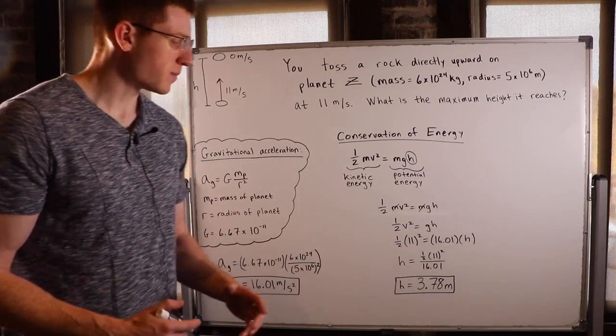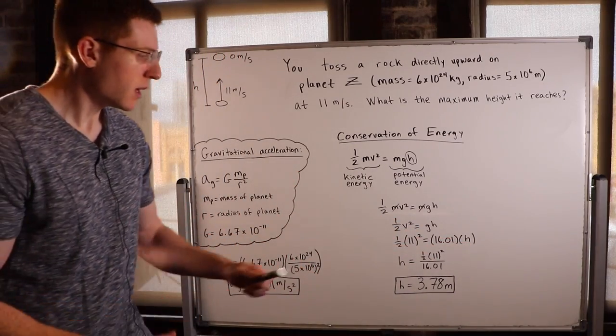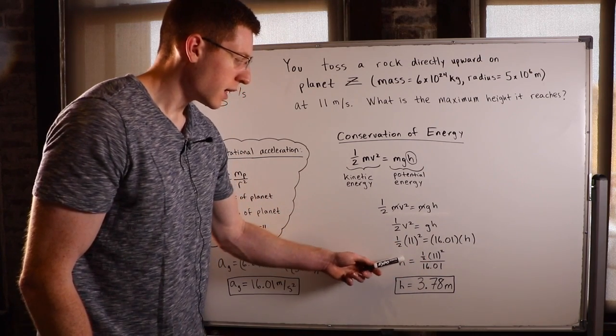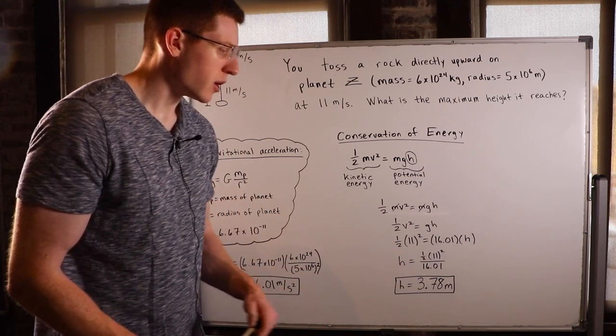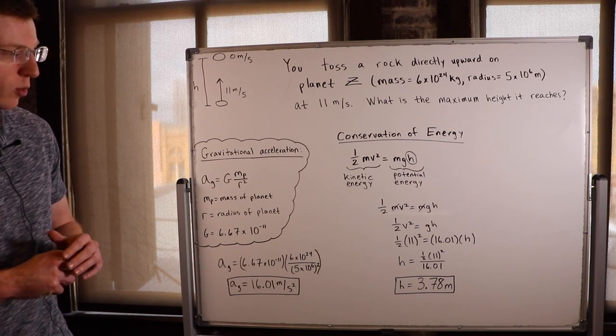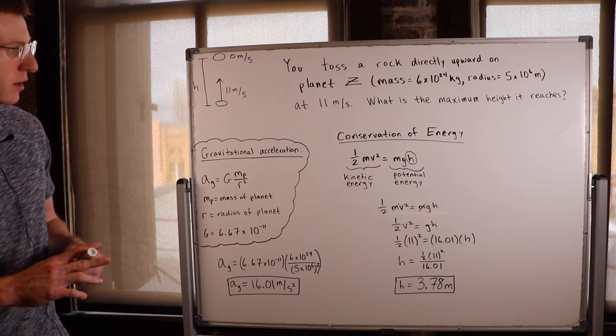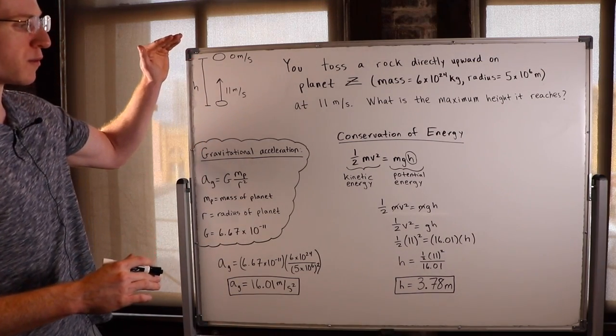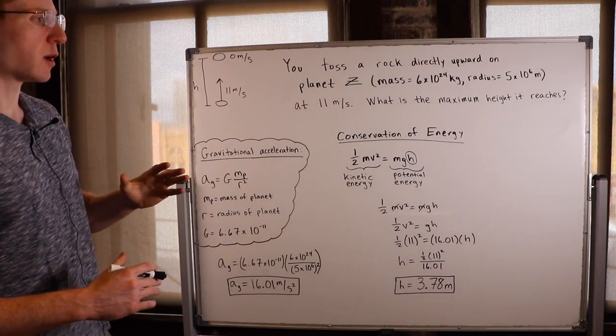And now all we have to do is solve for h. So it's just really algebra from here. I just divided both sides by 16.01 at this point. And I was left with h equals 1 half 11 squared over 16.01. And when you type that into your calculator, you get that this rock must have gone 3.78 meters up before it stopped in midair and then fell back down.